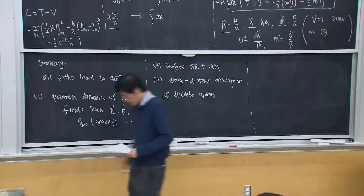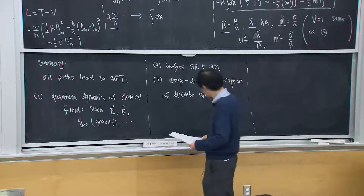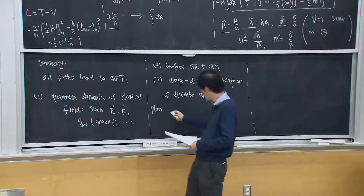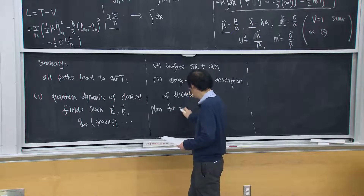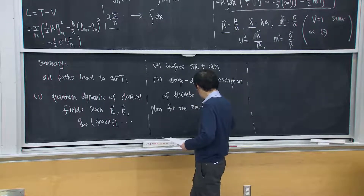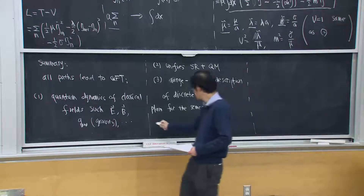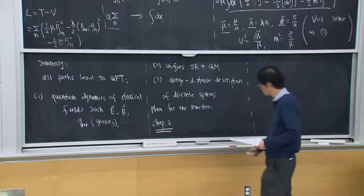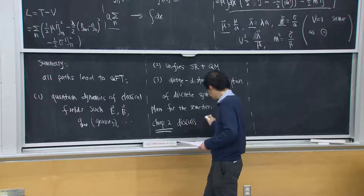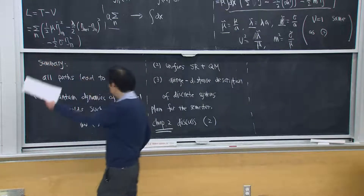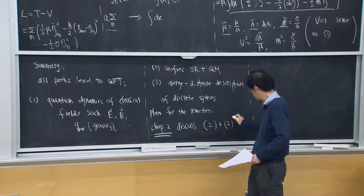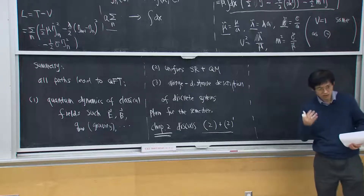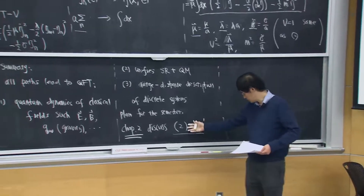Now a brief overview of the plan for the semester. In Chapter 2 we discuss the simplest field theory — equation 2 and 2 prime (its equation of motion). We always start with the simplest example.